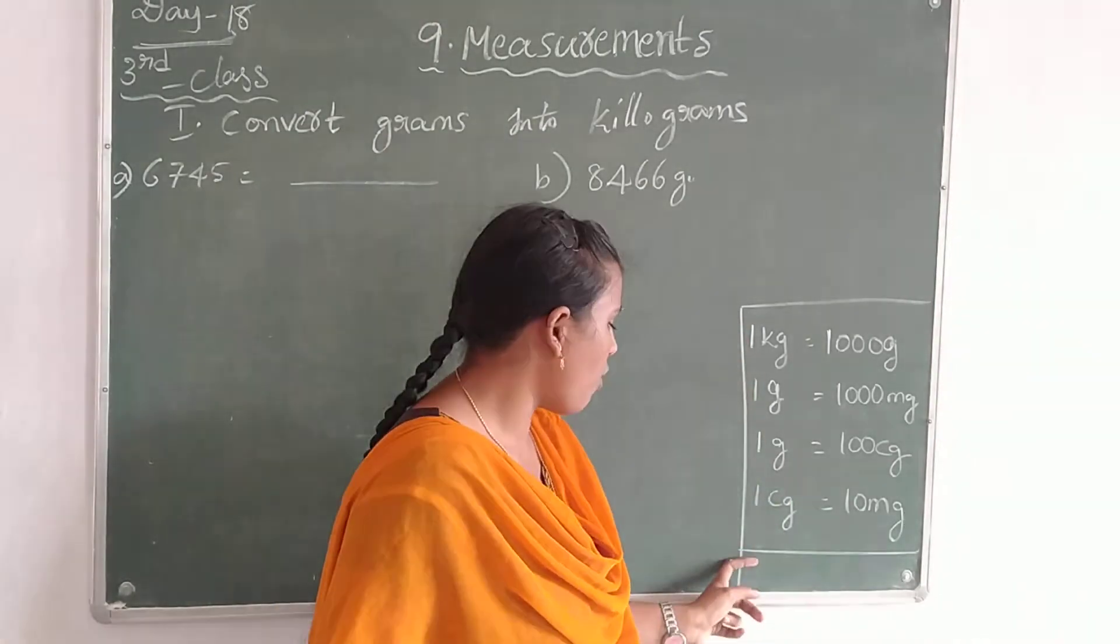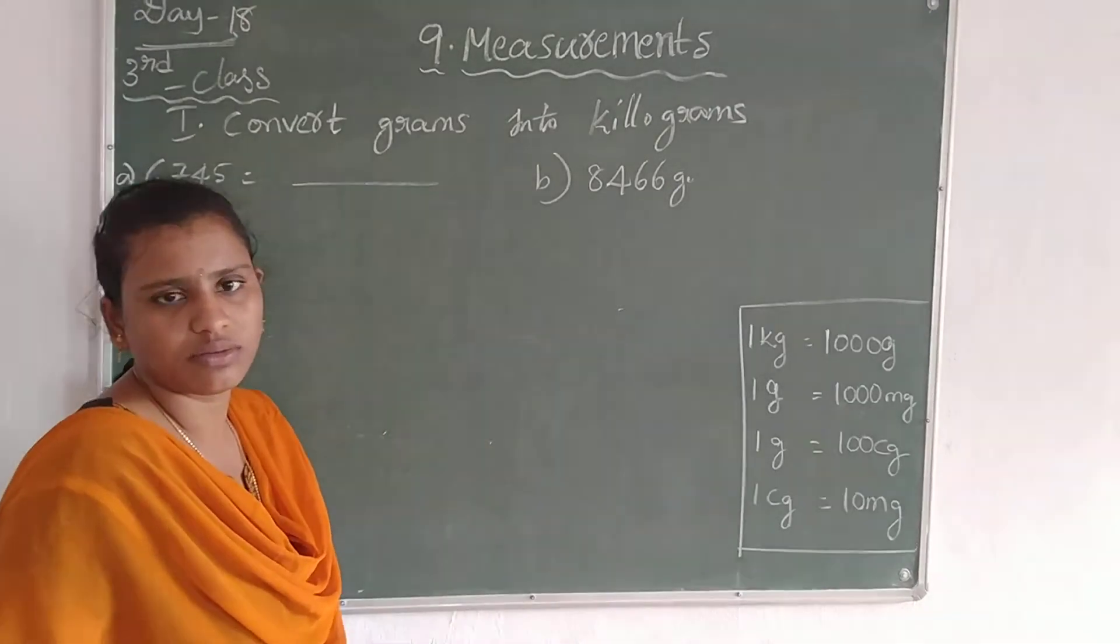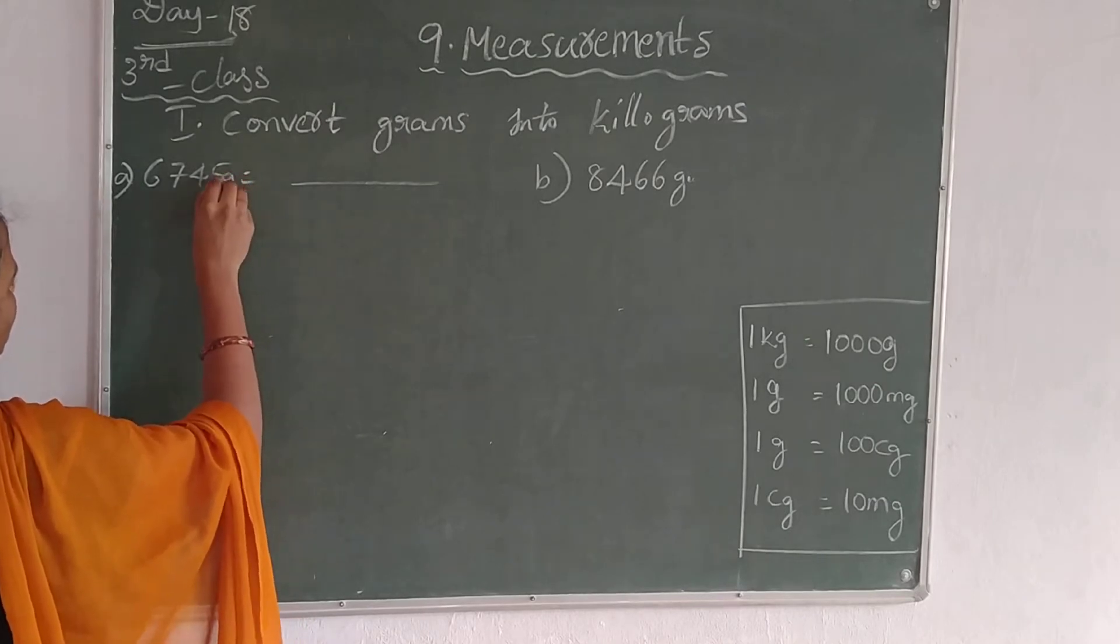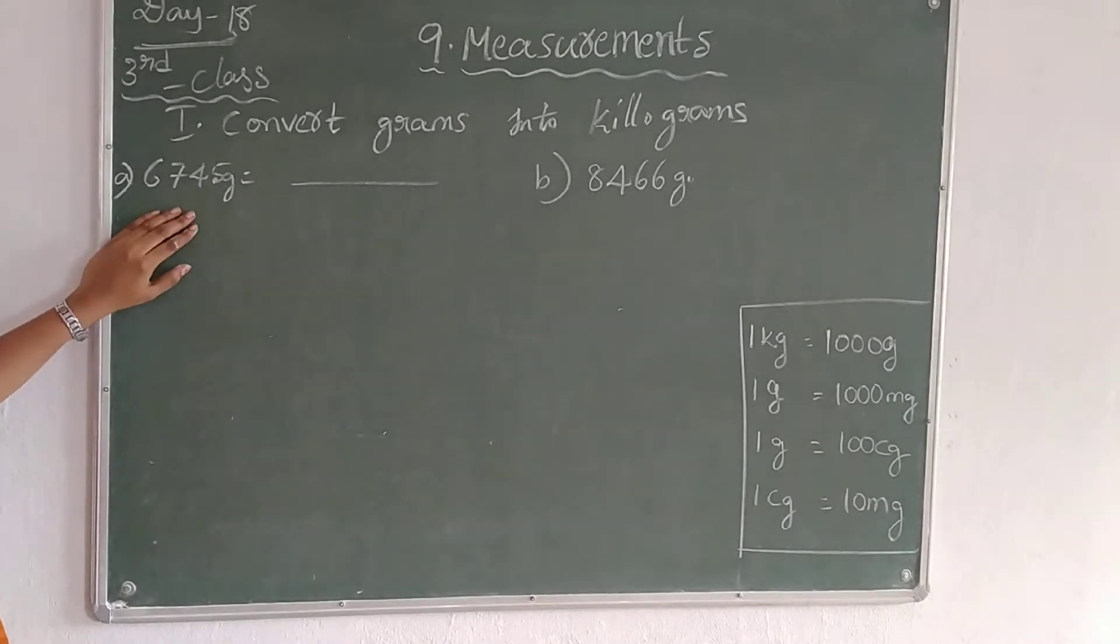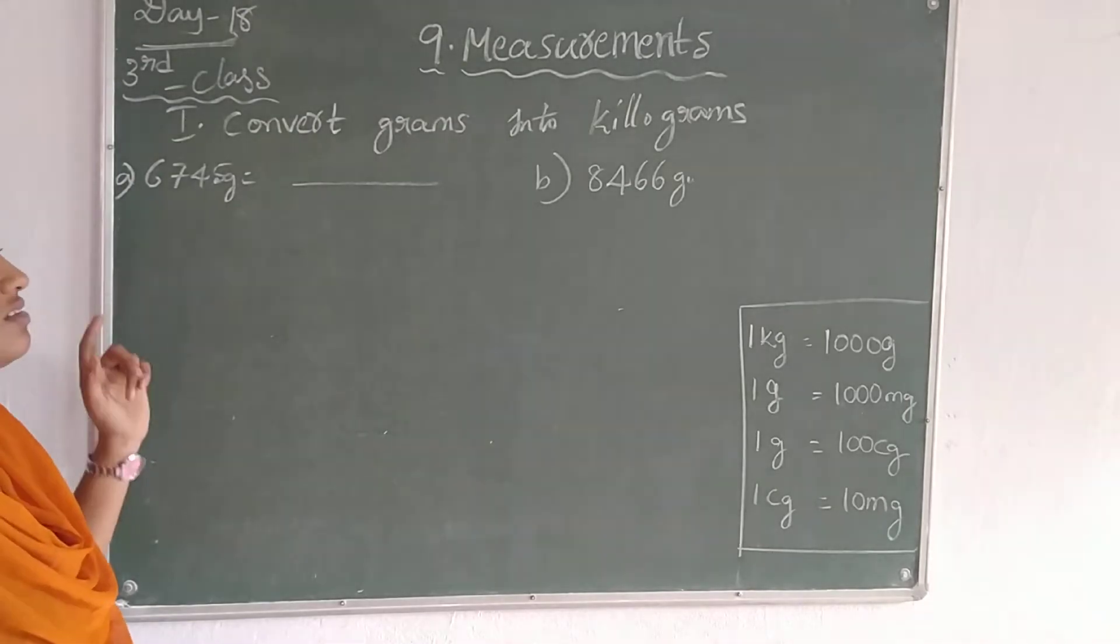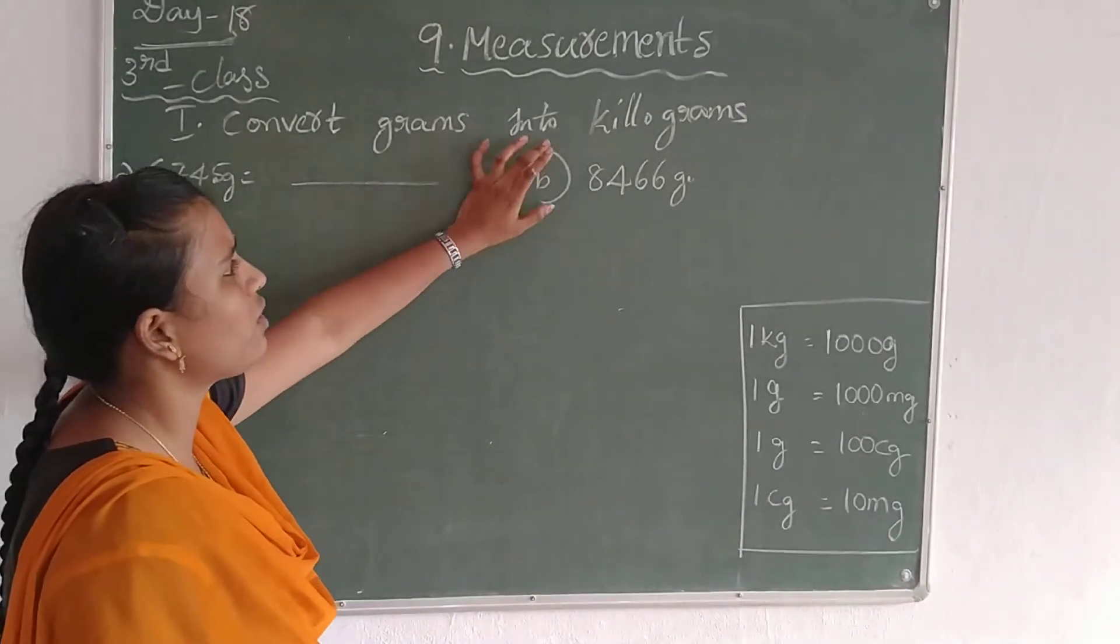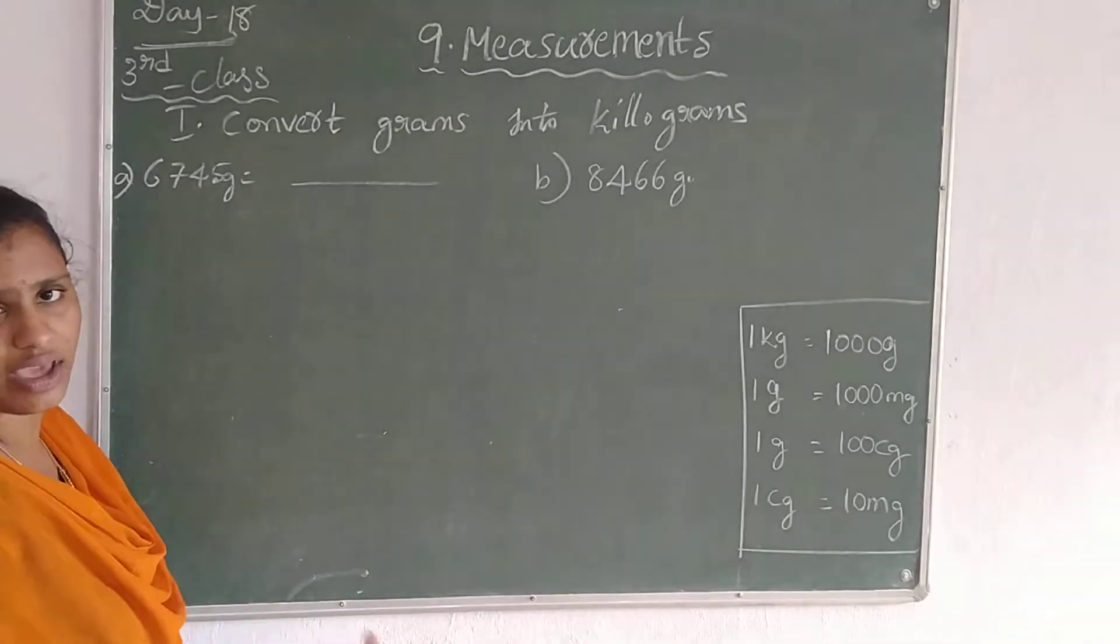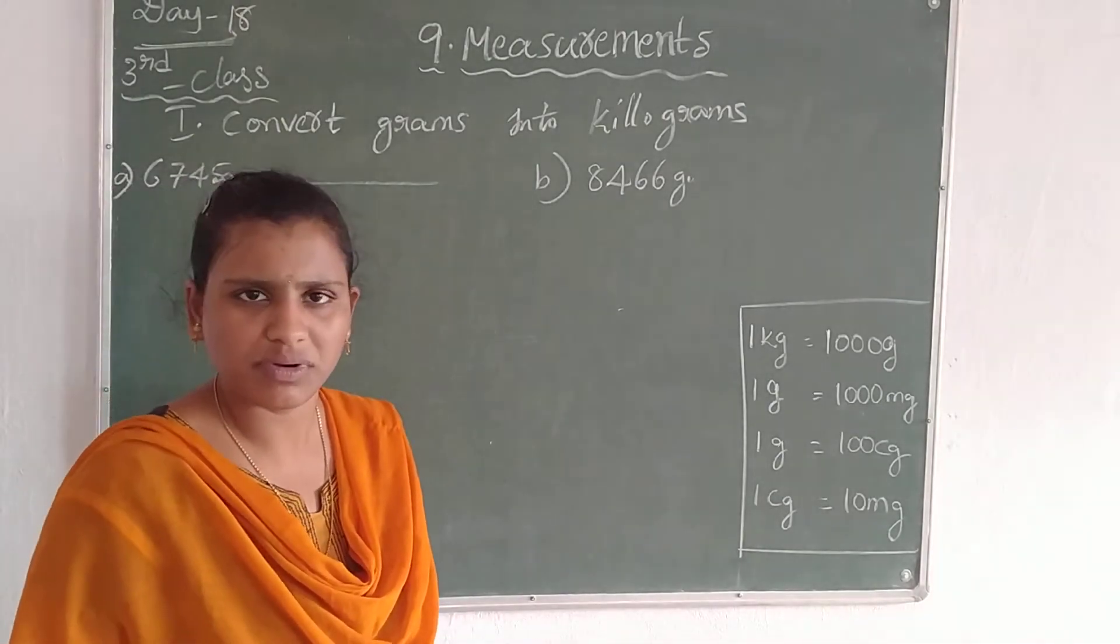Let's come to the sum. Grams are the small units, kilograms are the big units. If you want to convert grams into kilograms, small units into big units, you have to divide. If you want to convert big units into small units, you multiply the numbers.